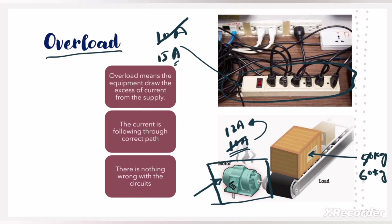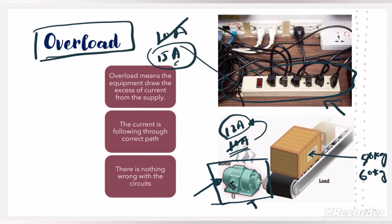One very important thing to understand is that in both cases the circuit was healthy, but due to wrong practice the equipment — the motor and the extension board — got overloaded. Due to this overload, both the motor and the extension board are carrying more than their rated current. That situation is called overload.